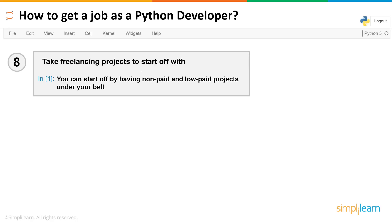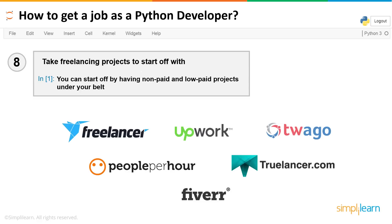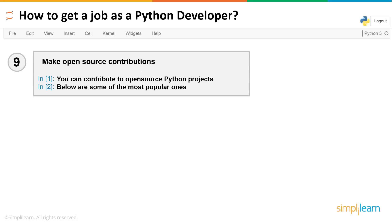Tip number eight: take on freelancing projects. So far, you've written your own code and created your own projects — but that's not enough. Take up projects from companies. These may be non-paid or very low paid — that doesn't matter, as long as you have something to show off. Some websites you can go to for freelancing work are Freelancer, Upwork, Twago, and Truelancer.com. This really shows recruiters that you're not just living on Python but always looking at how to implement and use it.